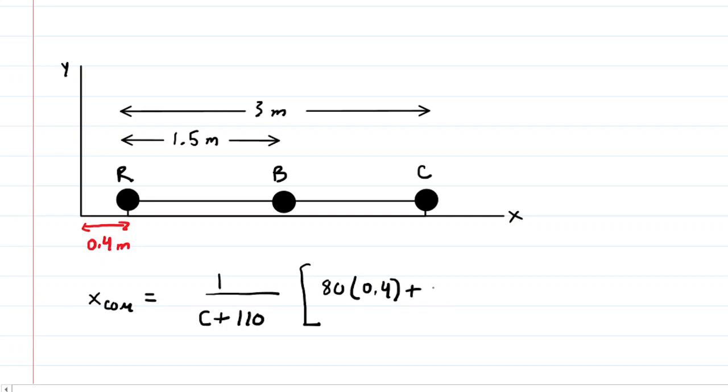And then we have the mass of the boat times its new x-coordinate. That new x-coordinate would be the 0.4 meters plus the 1.5 meters. So that would be 1.9 meters for that new x-coordinate for the boat's center of mass.